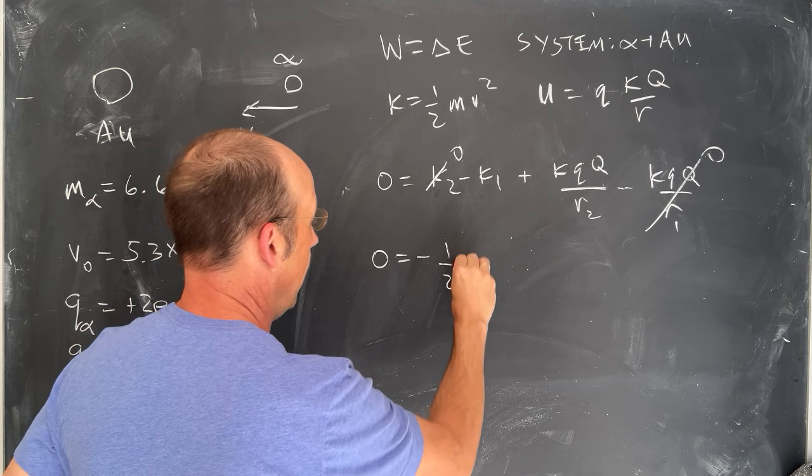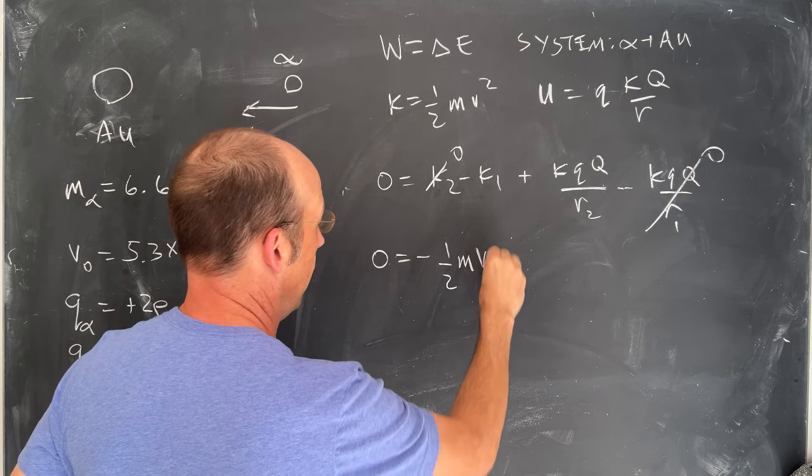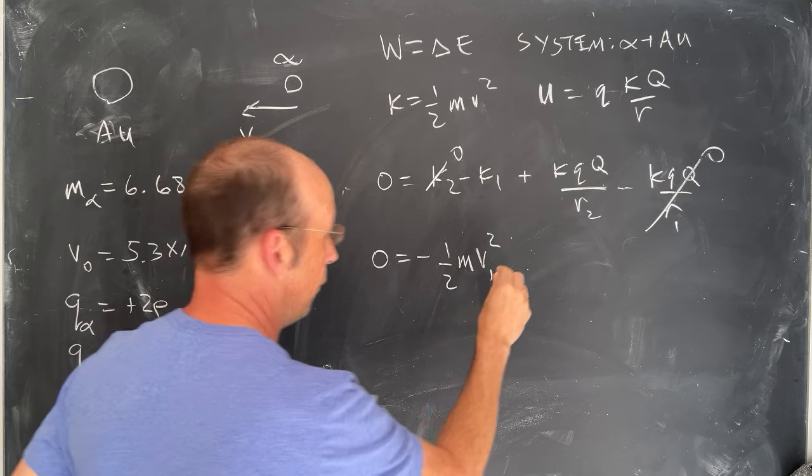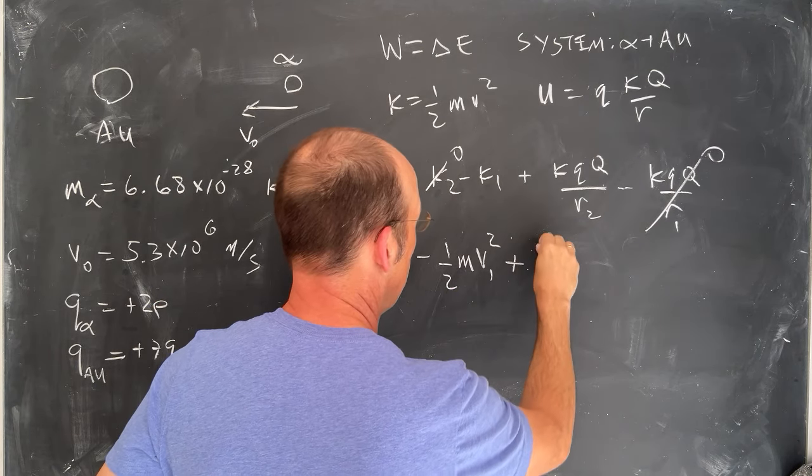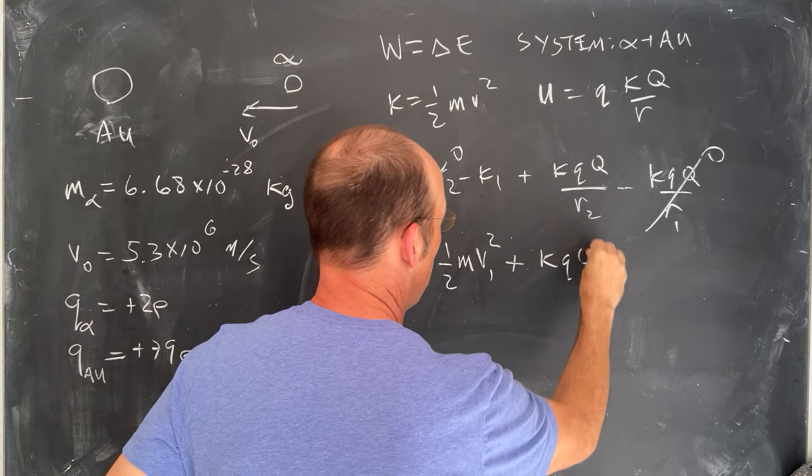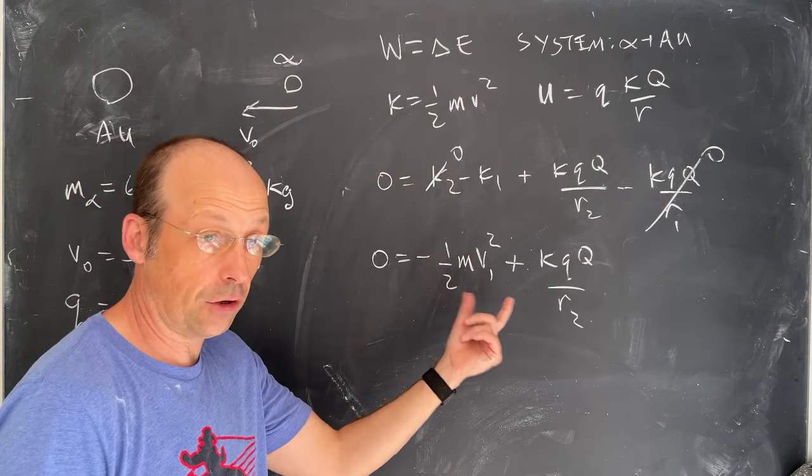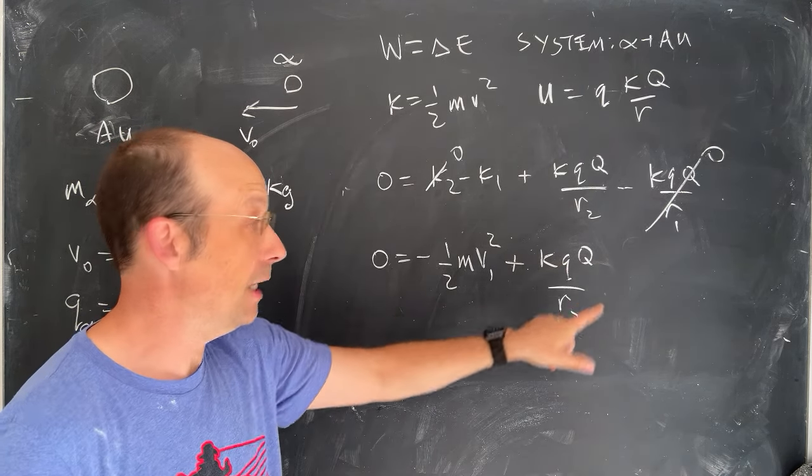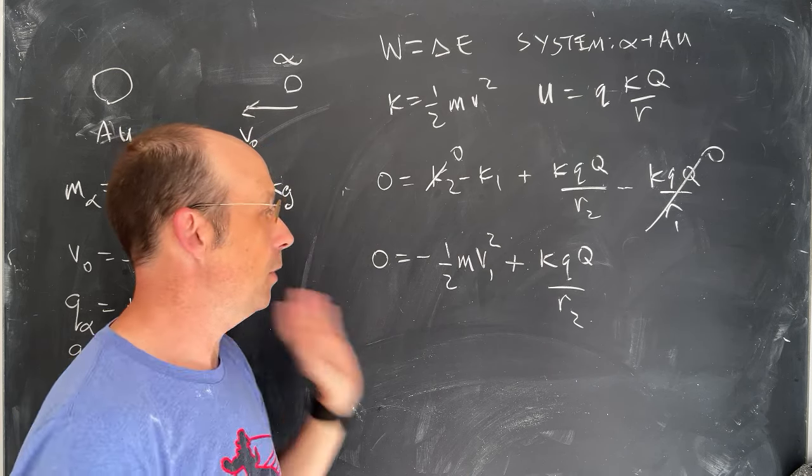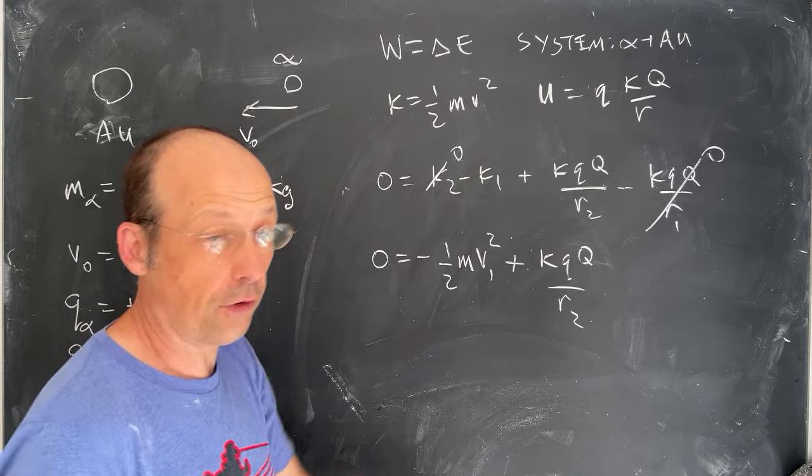So let's just put everything we know. Zero is minus one-half m, I'll call it V1 now, V1 squared, and that's the mass of the alpha, plus KQQ over R2. And you'll notice this is a negative term. Q and Q are both positive, so this is a positive term, so we can solve for everything. Let's just go ahead and solve for R2.